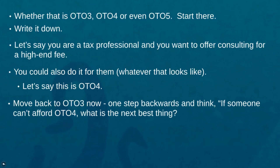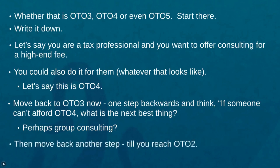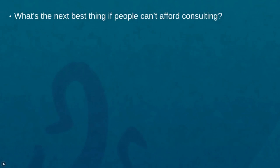From there, you need to move one step back to one-time offer number three. Think: if someone cannot afford one-time offer four, what is the next best thing? We like to take a piece of that and move backwards. The next best thing could be group consulting — so one-time offer three is group consulting, and one-time offer four is one-on-one personal consulting. Then move backwards again: what could be one-time offer number two?